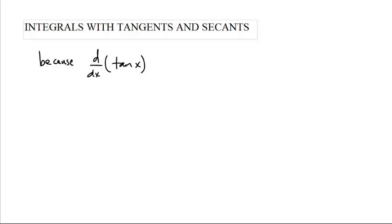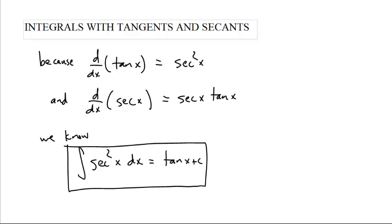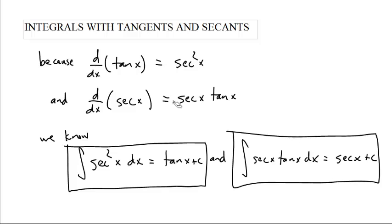Because the derivative of tangent is secant squared of x, and the derivative of secant is secant x tangent x, that gives us two integrals right off the bat. The integral of secant squared x dx is tangent x, and the integral of secant x tangent x dx is secant of x plus c.